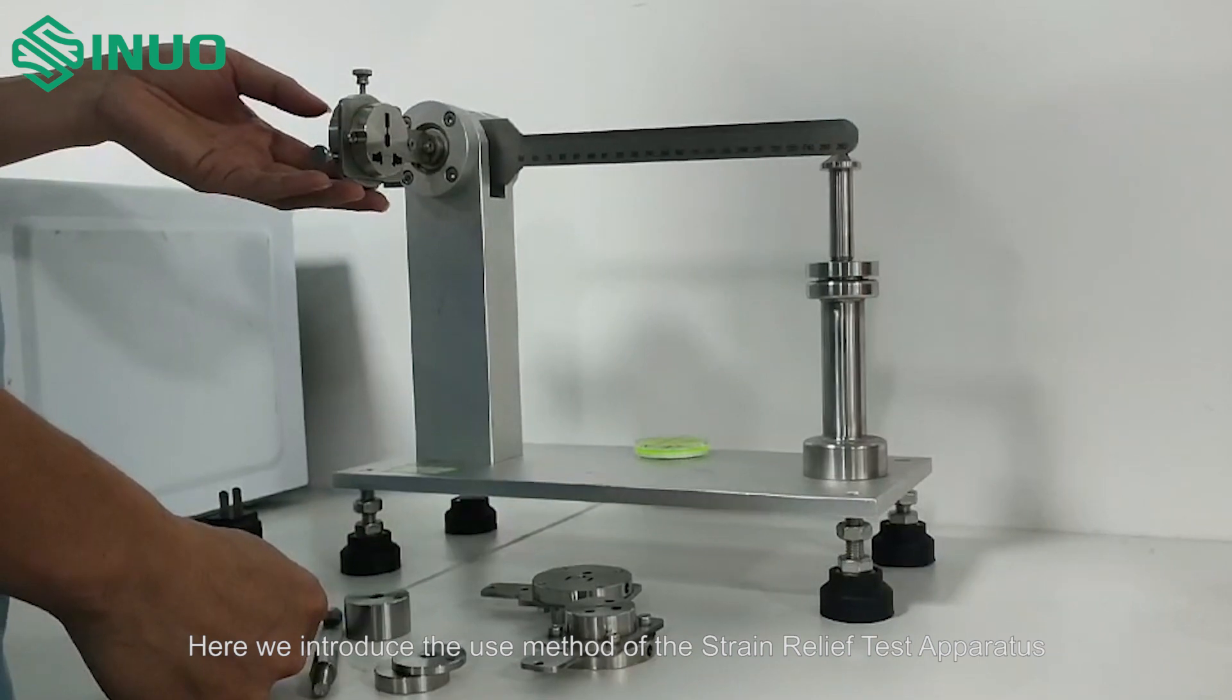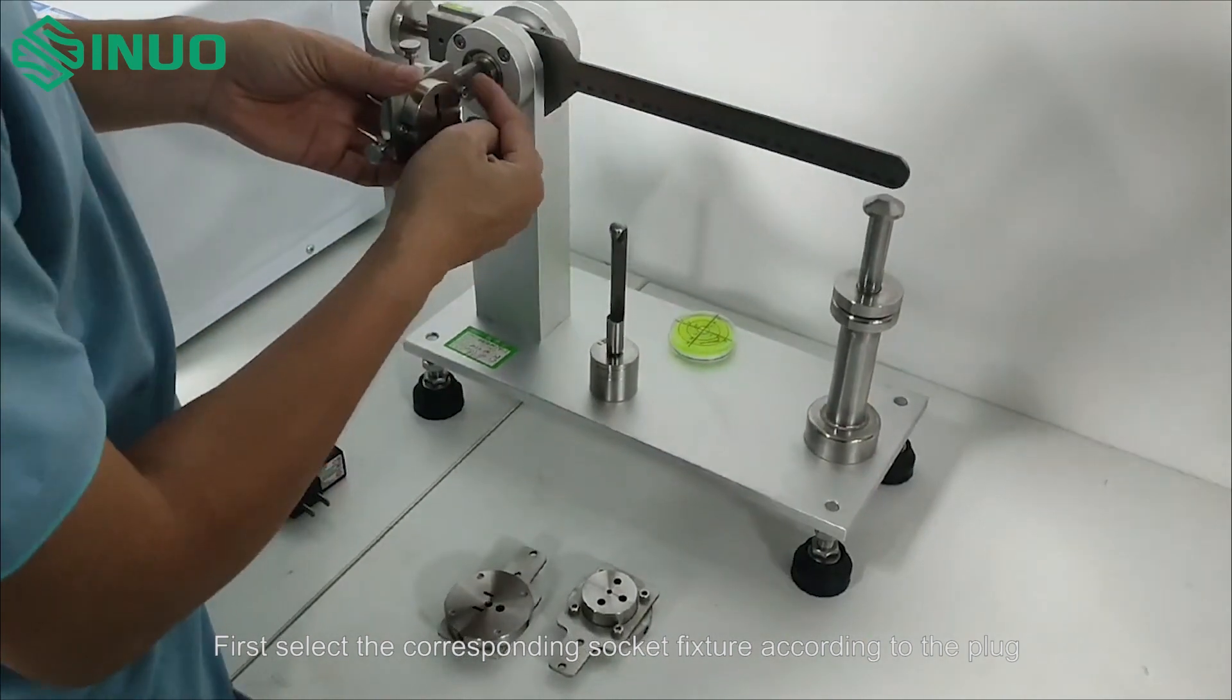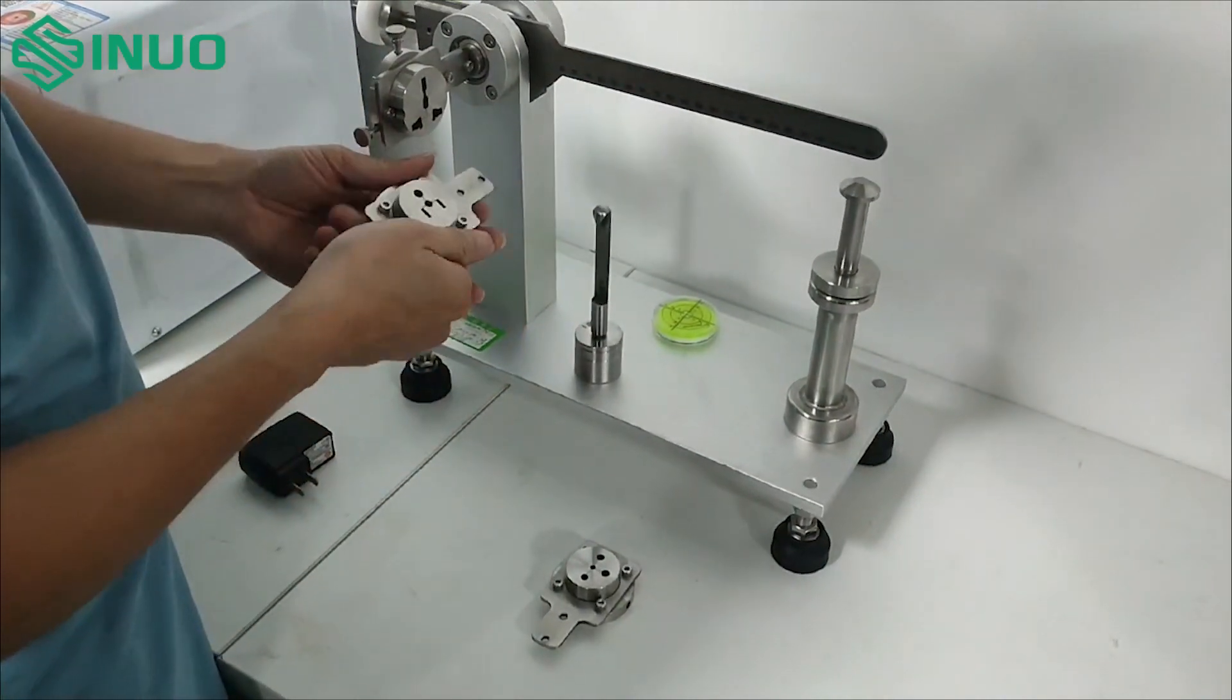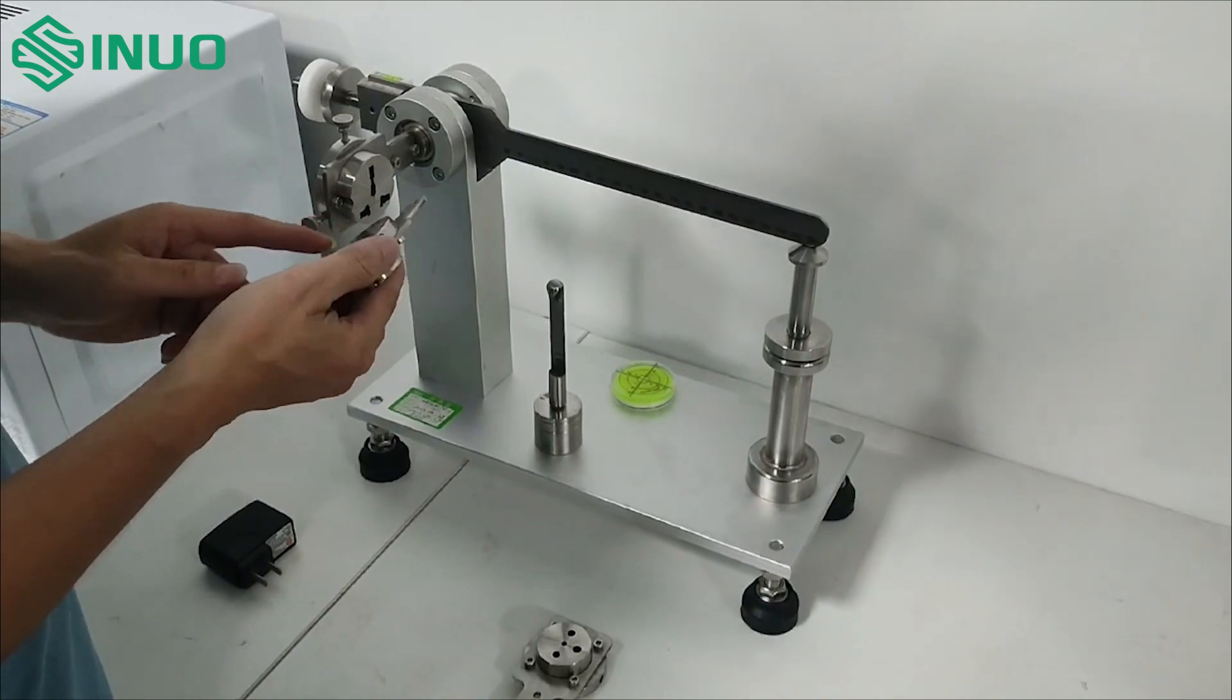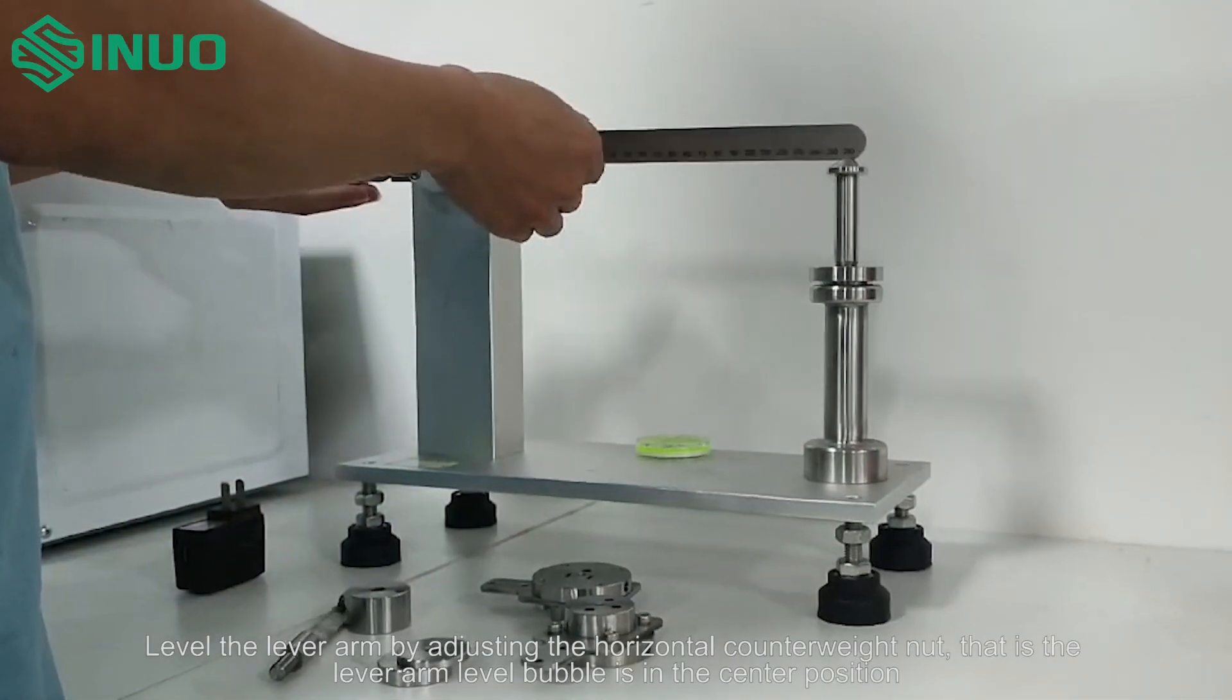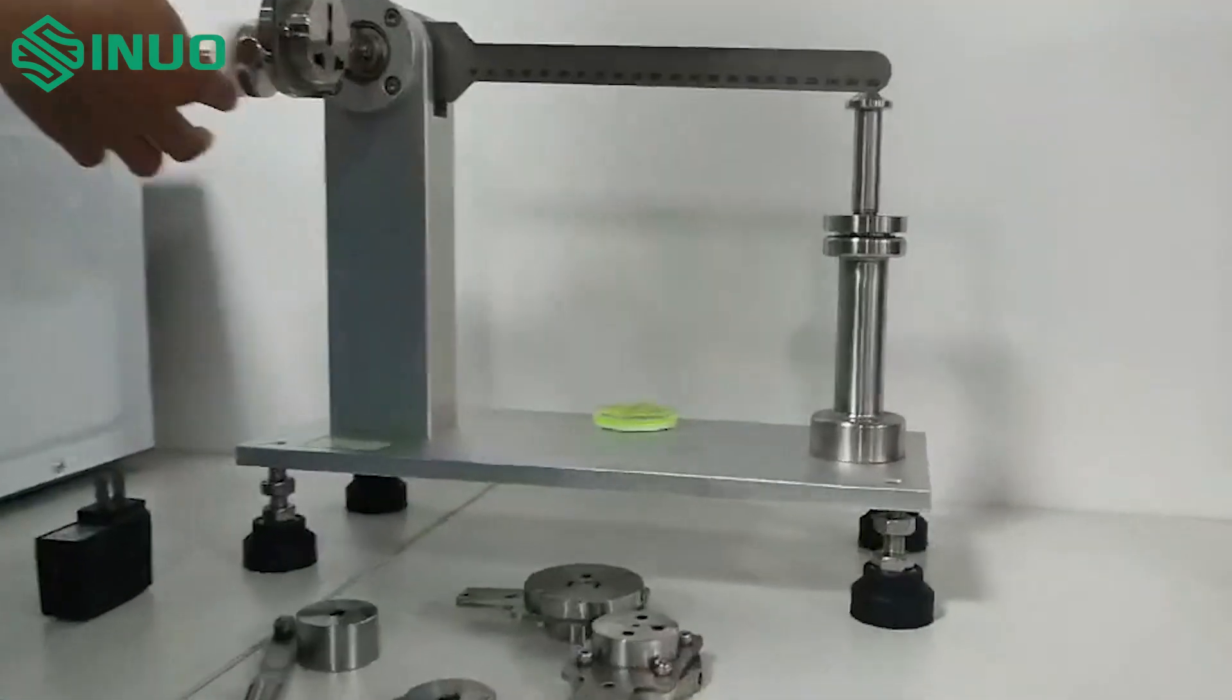Here we introduce the use method of the luminaire's thermal aging rack. There are three layers of equipment: the top layer is the E27 lamp holder, the middle layer has 16 terminals, and the bottom layer has 16 sockets.